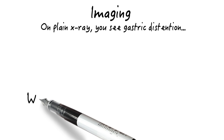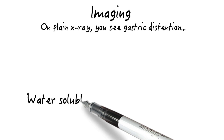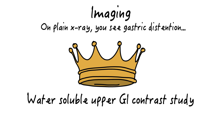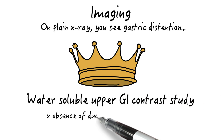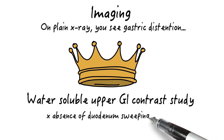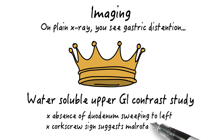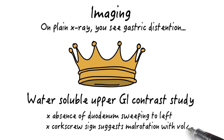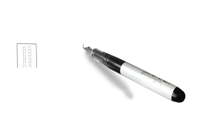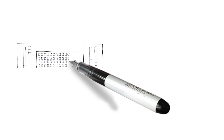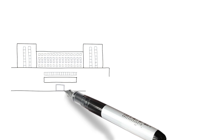Your team decides to send Sunny for a water-soluble upper GI contrast study, as it is the gold standard, and you find evidence of a duodenum that does not sweep to the left. Rather, it remains on the right side of the abdomen with a corkscrew appearance of the proximal intestines, suggesting malrotation with volvulus. You have officially diagnosed Sunny with malrotation and volvulus as a cause of her bilious emesis.